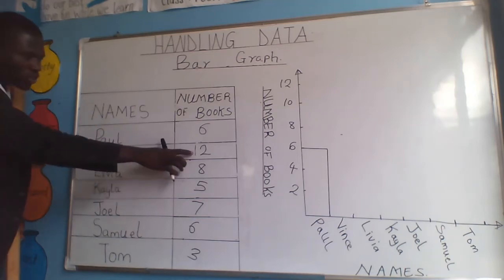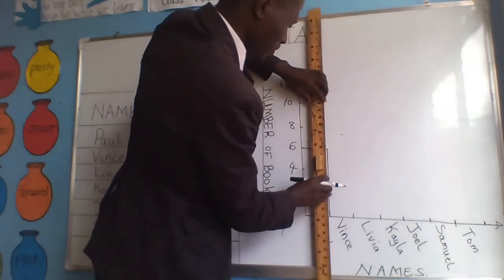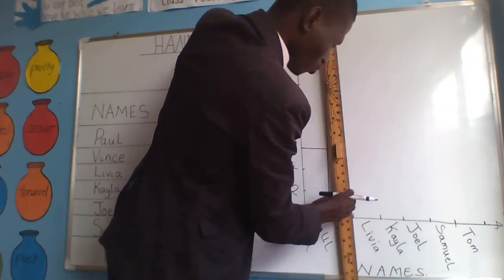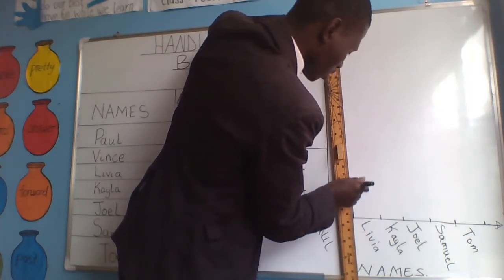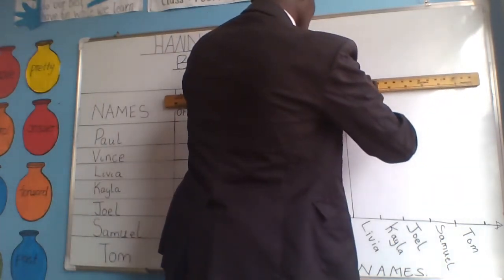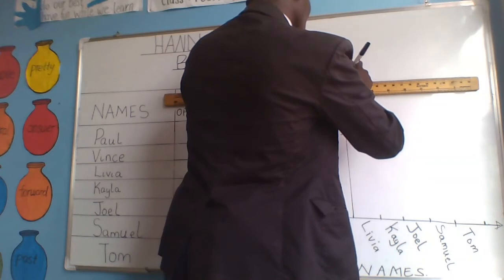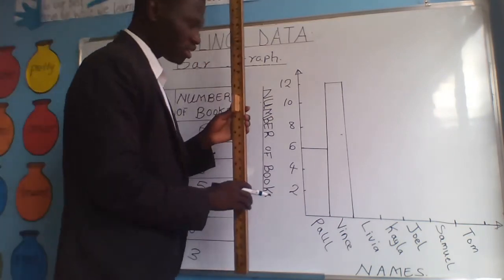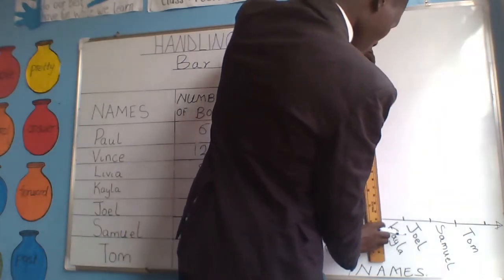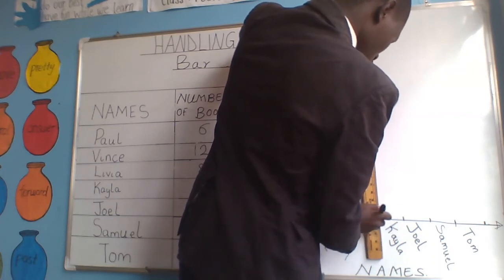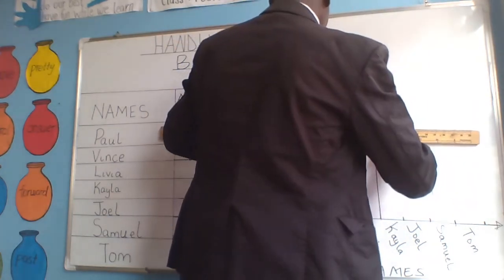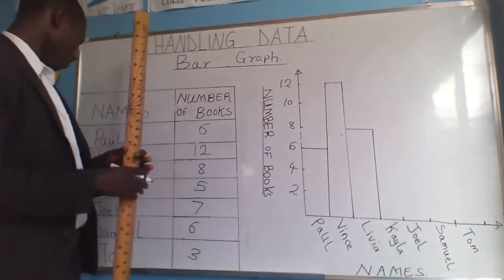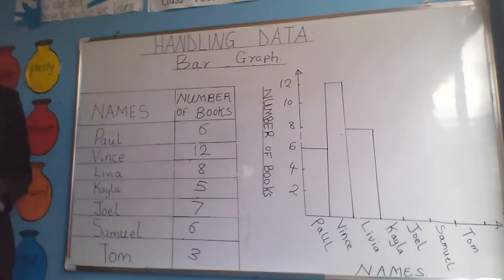This one has only 6 books. The next one has 12 books — 12 steps. So let's draw the bar. And Rivia has 8 books, so we are going to draw up to number 8. Another name is Kera. Kera has how many books? 5 books.